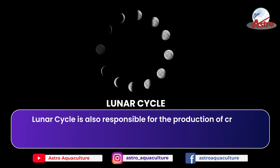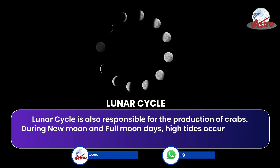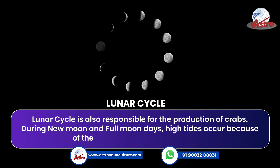In the supply chain analysis for wild catch, brackish water in mangrove forests is the source of mud crabs. Fishermen directly catch Scylla serrata from these water sources using trap nets, gill nets, and scoop nets.